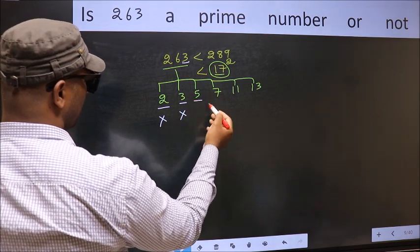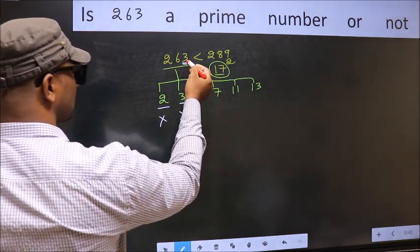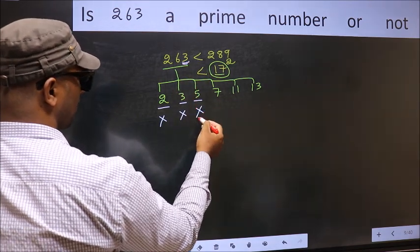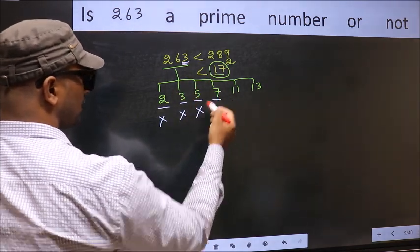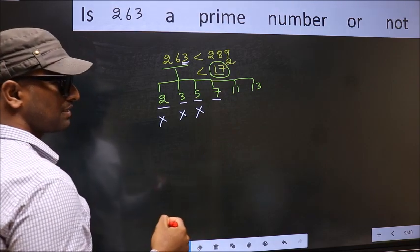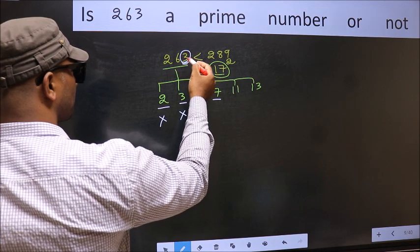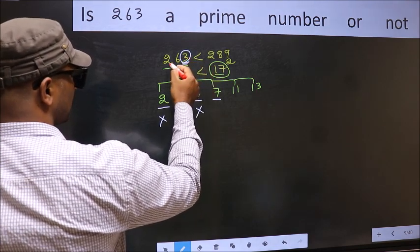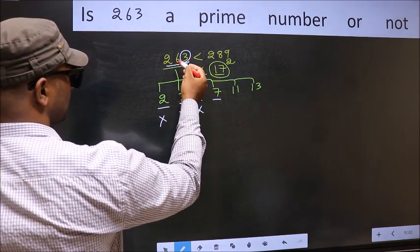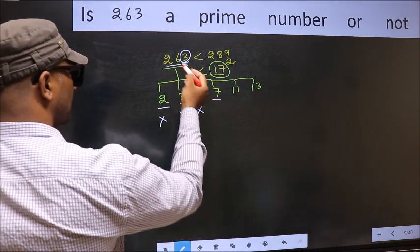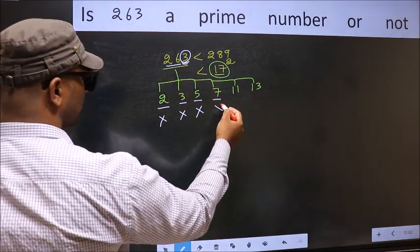Next, number 5. Last digit is neither 0 nor 5. So, this is not divisible by 5. Next, number 7. To check divisibility by 7, for that you double this: 3 into 2 is 6. Subtract from this: 26 minus 6 is 20. 20 is not divisible by 7. So, this number also not divisible by 7.